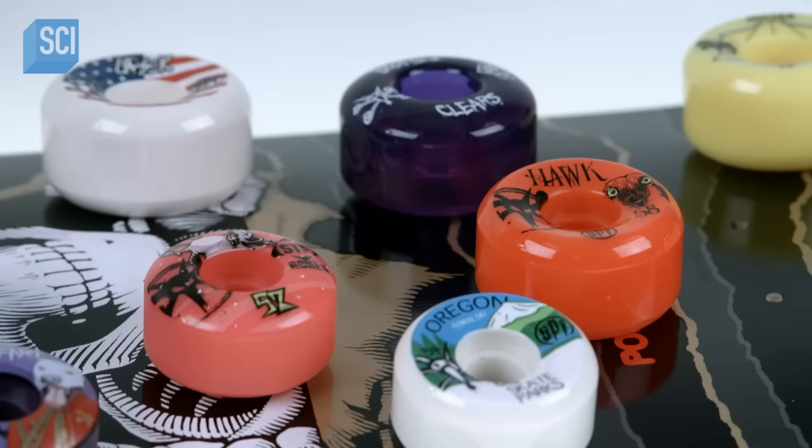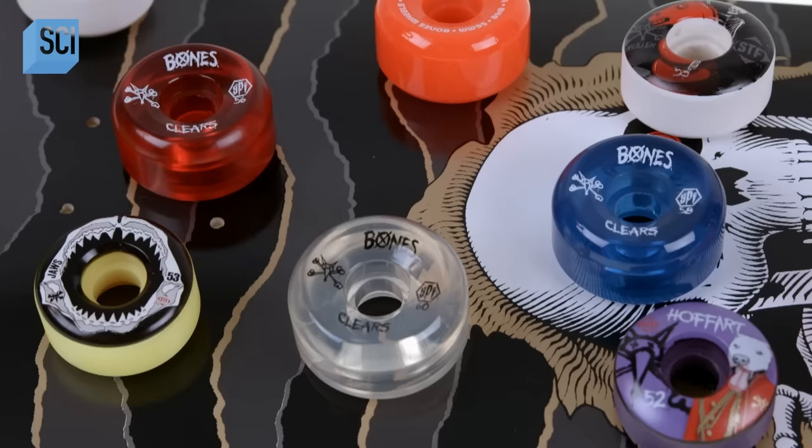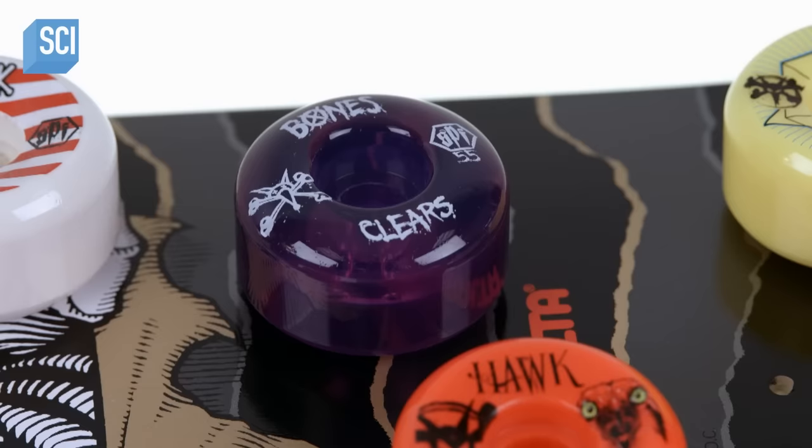Skateboard wheels come in different sizes, hardness, colors and graphic designs. For the rider, there are many practical and aesthetic considerations.